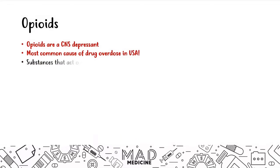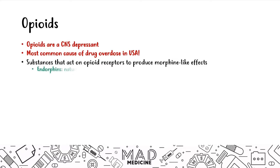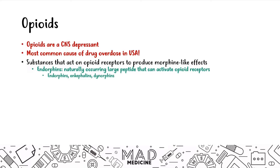Opioids act on opioid receptors to produce morphine-like effects. They act very similarly to endorphins, which are naturally occurring large peptides that activate these opioid receptors. You're going to have endorphins, enkephalins, and dynorphins — all of these activate the opioid receptors, which are found on your central and peripheral neurons.